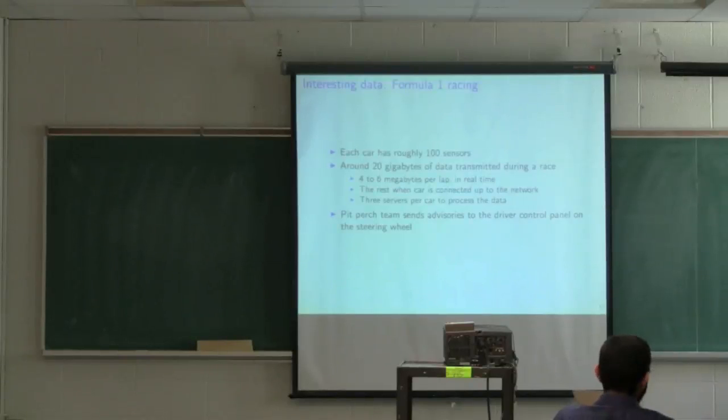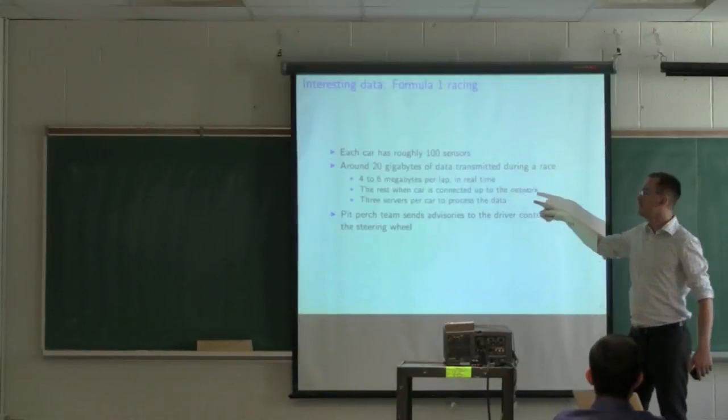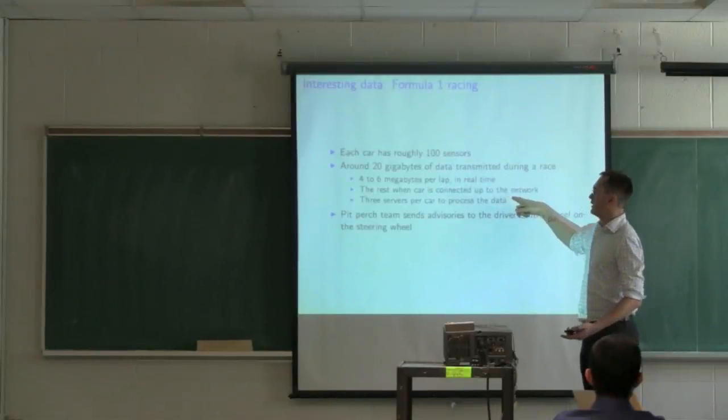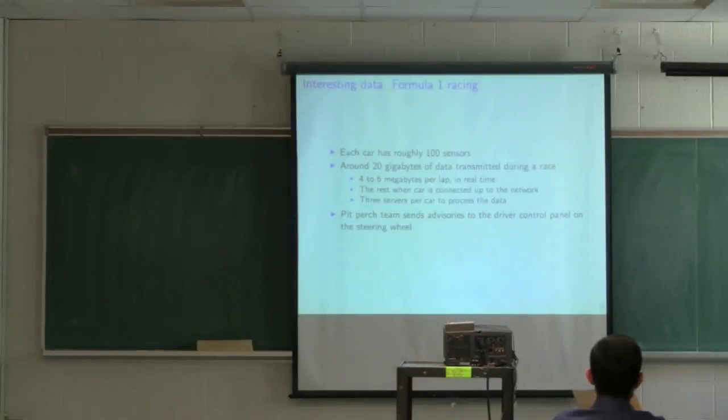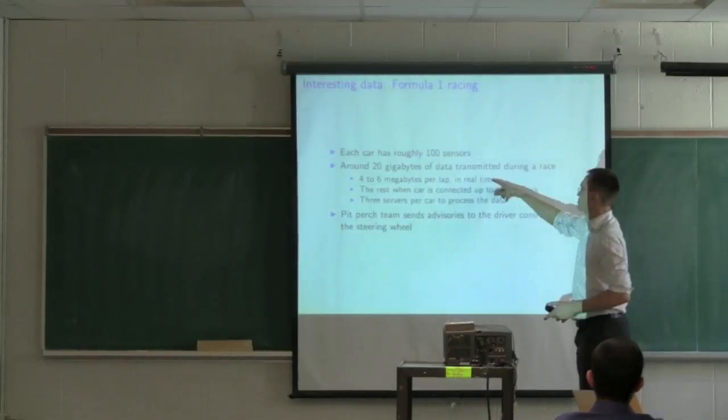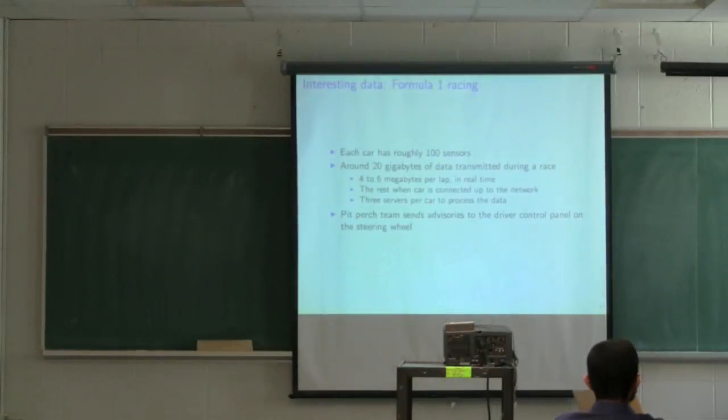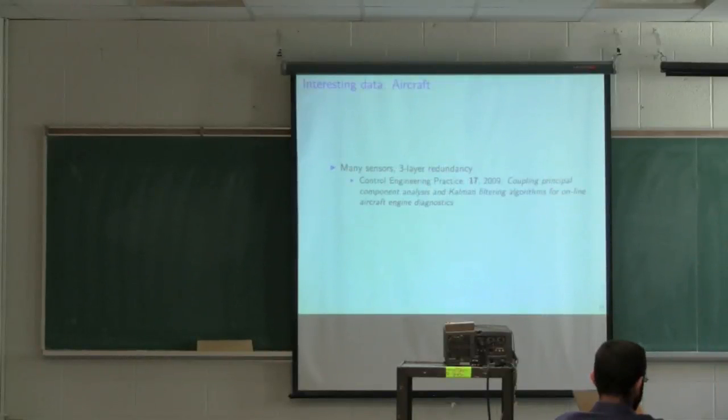Formula One. I don't follow Formula One, but I just found this tidbit here. Each car is extremely instrumented. They'll collect about 20 gigabytes of information on a single race. 46 megabytes per lap that's transmitted in real time wirelessly to the base. That's not a significant amount of data at all, but when the car comes back in, they get the rest of it. It takes three servers to process the data from each car and use that to plan maintenance and determine when is the optimal time to have changes made to the vehicle. From this real-time data, they'll crunch through that and send advisories to the driver on what the driver should be doing.